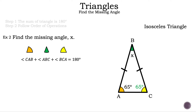We know the sum of a triangle is 180 degrees. So we're going to write down that the orange angle, or angle CAB, plus the green angle, or angle ABC, plus the yellow angle, or angle BCA, is equal to 180 degrees. Another way of thinking about this is to put all the angles together and it forms a half circle, which is also 180 degrees.